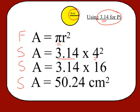Now remember, we need to do order of operations — we need to do the exponent before we multiply. So 4 squared is 16, and then we simply multiply that by 3.14. So the area of this circle would be 50.24 square centimeters.